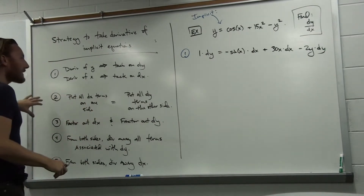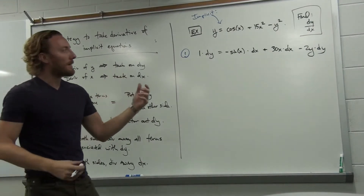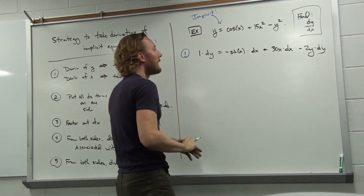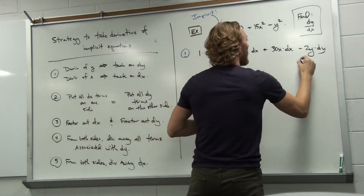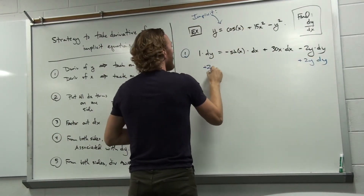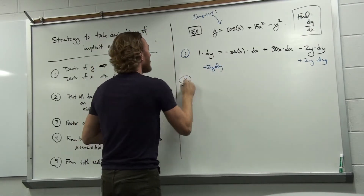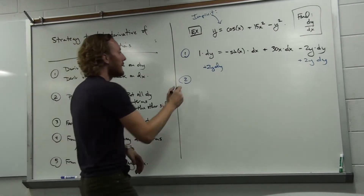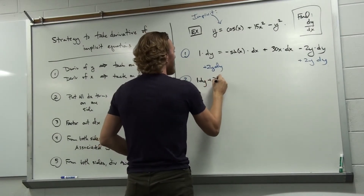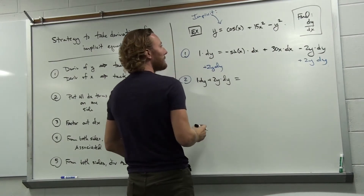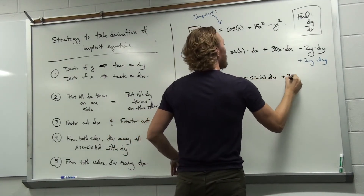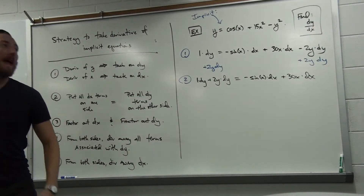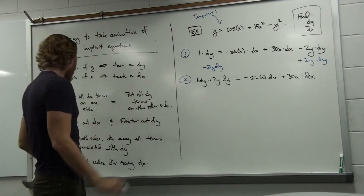Now, what's our next step? We want all the dx terms on one side and all the dy terms on the other. All the dx's here are already on the right, so all we have to do to get all the dy's on one side is add 2y dy to both sides. In order to preserve equality, you add the same thing to both sides. So adding 2y dy to both sides gives you: 1 dy plus 2y dy equals minus sine x dx plus 30x dx. Now all the dy terms are on one side and all the dx terms are on the other.